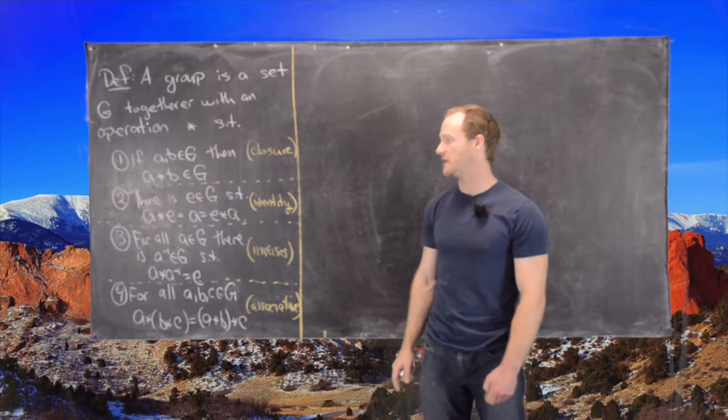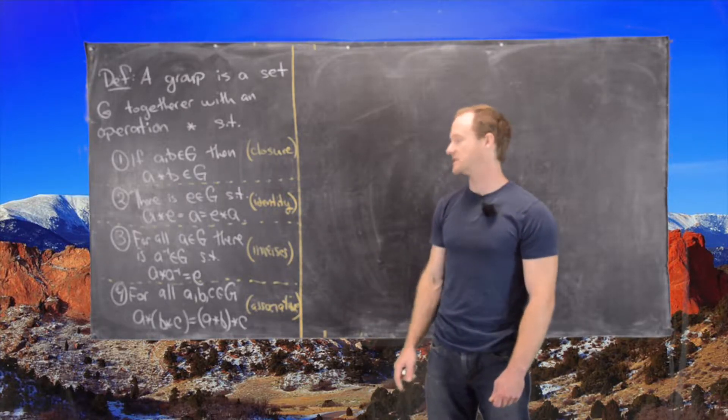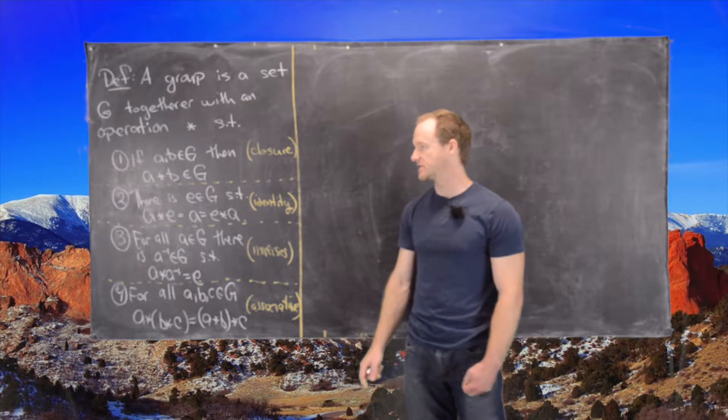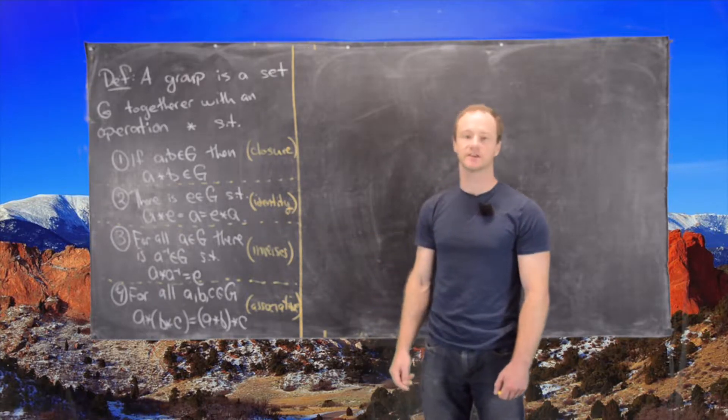Next, there's a special element E in G that acts as the identity. So in other words, A star E and E star A equals A.